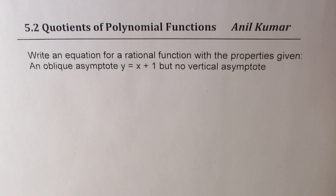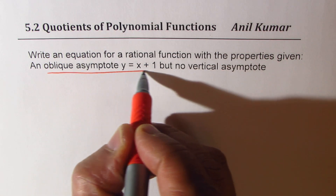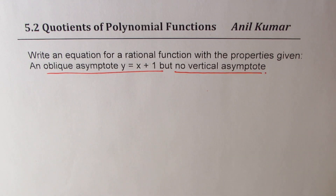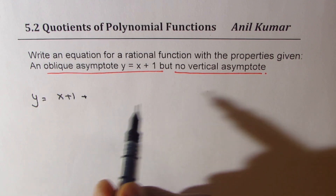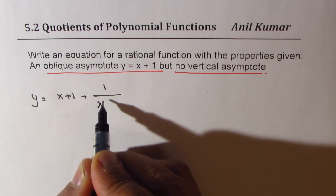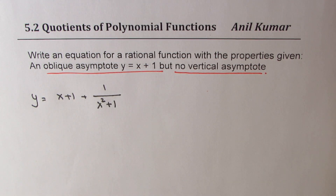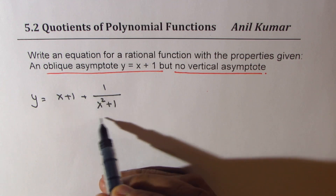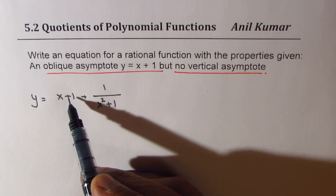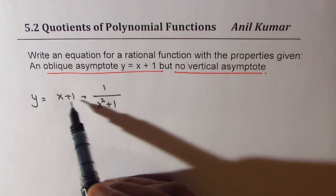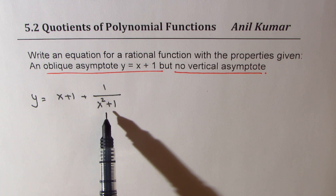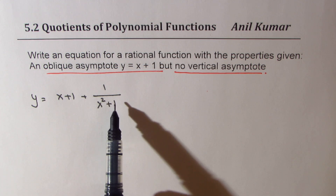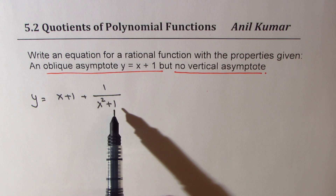Now let's take the next one: oblique asymptote y equals x plus 1, but no vertical asymptote — that is very important. That means we have to approach y equals x plus 1, but with no vertical asymptote. So we could have something like 1 over (x squared plus 1) added to the oblique asymptote. If we have 1 over (x squared plus 1), we are approaching a value but never quite there. The denominator is always non-negative and non-zero for all values.